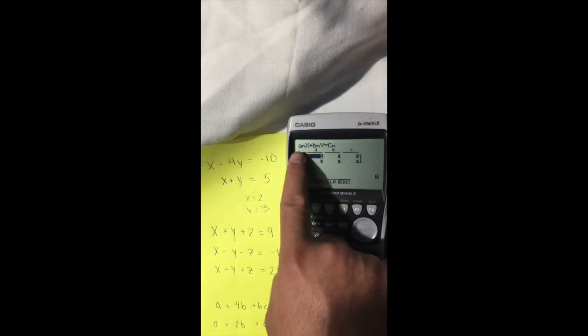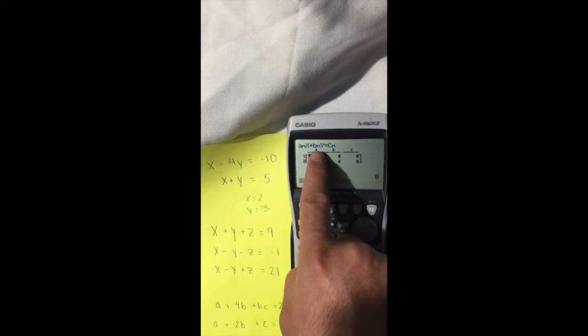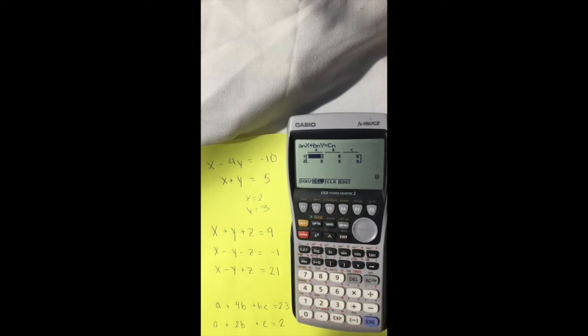If you can tell, it says A times X plus B times Y equals C, and that's just saying what's in front of the X, what's in front of the Y, and what is it equal to. Here we have 1 in front of the X, negative 4 in front of the Y, and it's equal to negative 10.